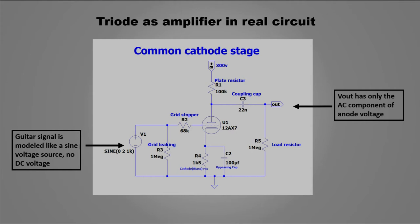This is the schematic of our real circuit for testing how a triode behaves. On the left, we see a sine voltage source that imitates the signal of a guitar pickup.